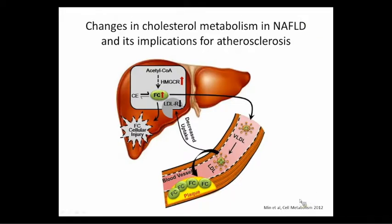A study by Min et al. from VCU looked at cholesterol metabolism in NAFLD patients and its implications for atherosclerosis — because these patients are mostly dying from strokes and heart attacks. In NAFLD, there are increases in HMG-CoA reductase and its regulator SREBP2. There's more free cholesterol available, which gets put into circulation as VLDL and then breaks down to LDL. There's also a decrease in LDL receptors, resulting in more LDL and free cholesterol causing plaques. This is the mechanism driving atherosclerosis in NAFLD patients.